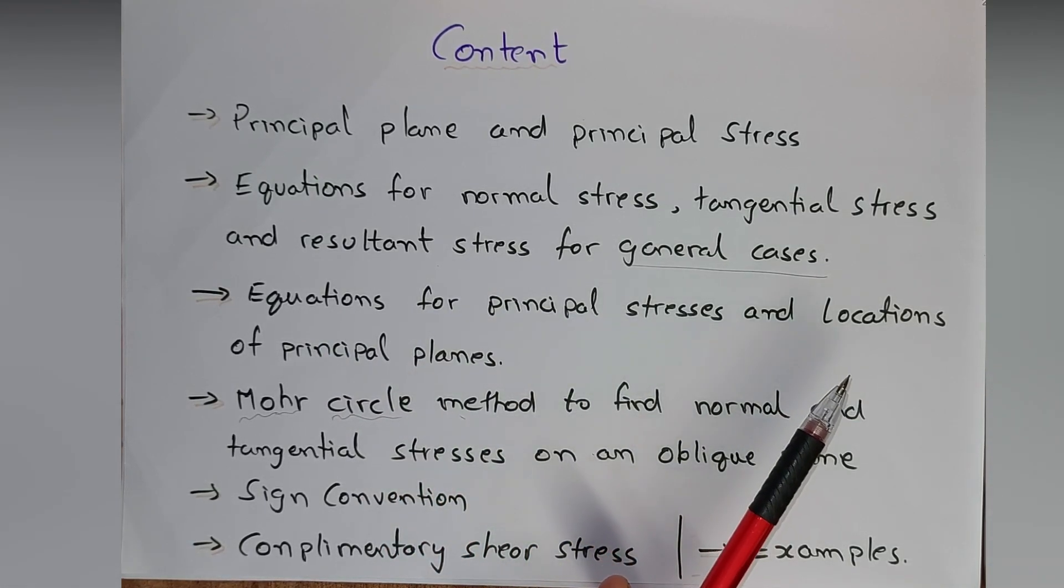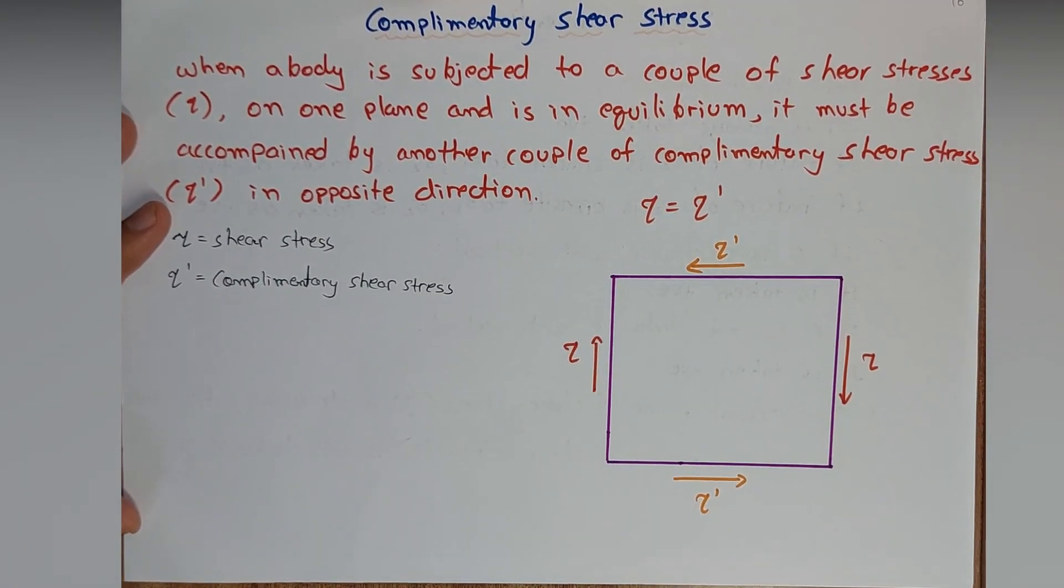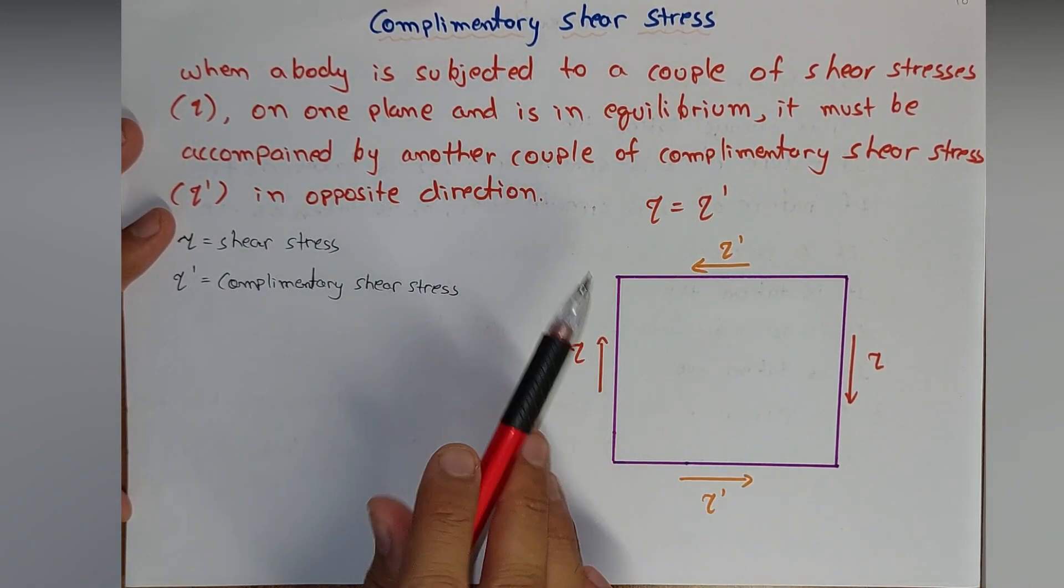Then we saw Mohr's circle method and last time we had seen sign convention. This is the last lecture of the theoretical part where we'll be seeing complementary shear stresses. Now what are complementary shear stresses?